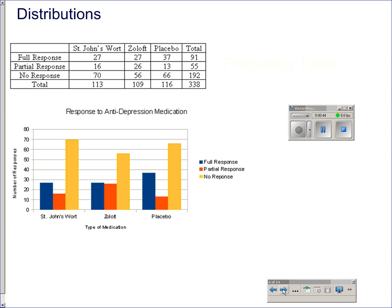A distribution displays the possible values of a variable and how often it takes them. Depending on the type of data and what you are looking for, there are a number of ways to organize and display the distribution. When a variable is categorical, the first step is usually to construct a frequency table, which displays the possible categories and the number of observations in each category.